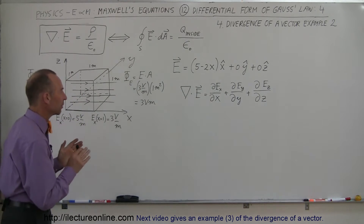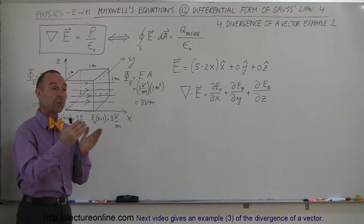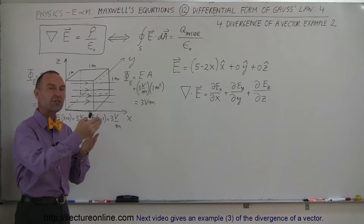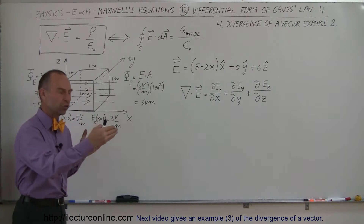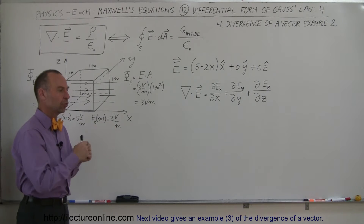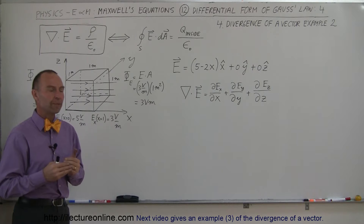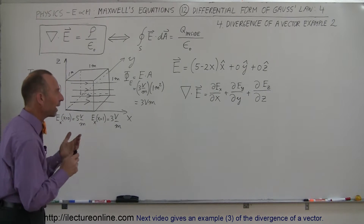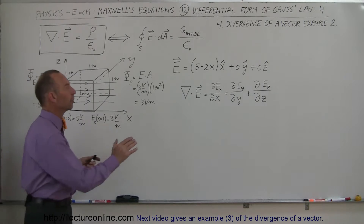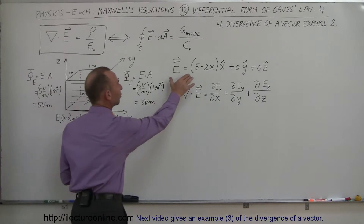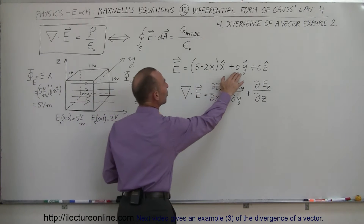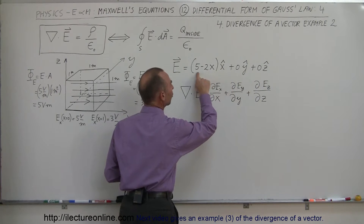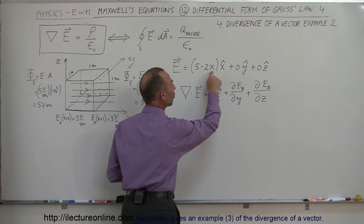What we're going to do here — because in the previous video we saw that when we take the divergence of the electric field, we get the change of electric field as a function of position, so how fast is the field changing — well, the divergence can also tell us something different. For that we're going to do an example where we have an electric field that has no components in the Y or the Z direction, only a component in the X direction, and notice that it does change with position.